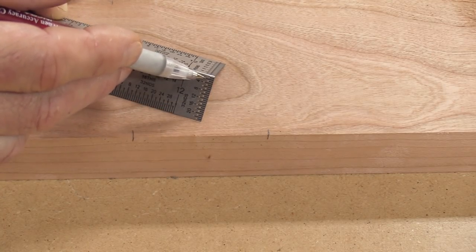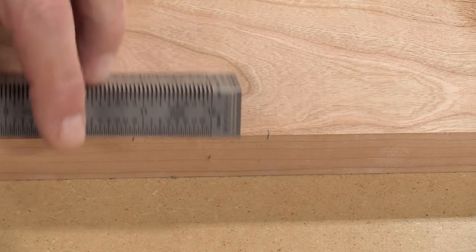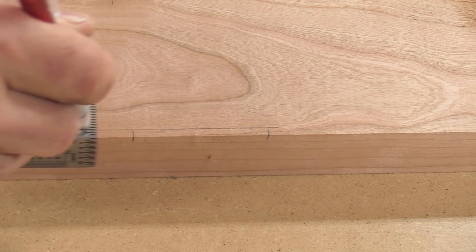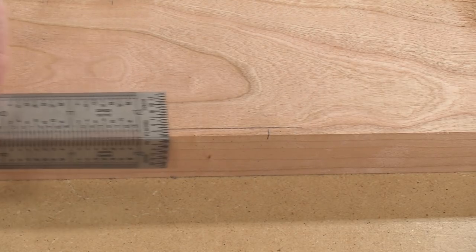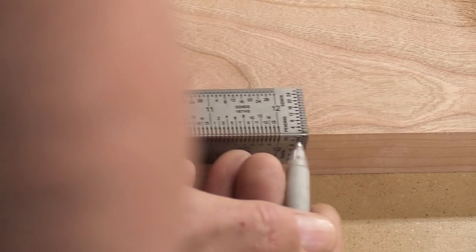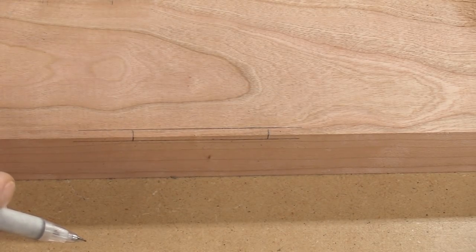Now on one end of this, there's also graduations going vertically here, in 32nds of an inch increments. So I can also take this, let's say, make a mark on an eighth inch here, and an eighth inch here, and get that on both faces of the board.